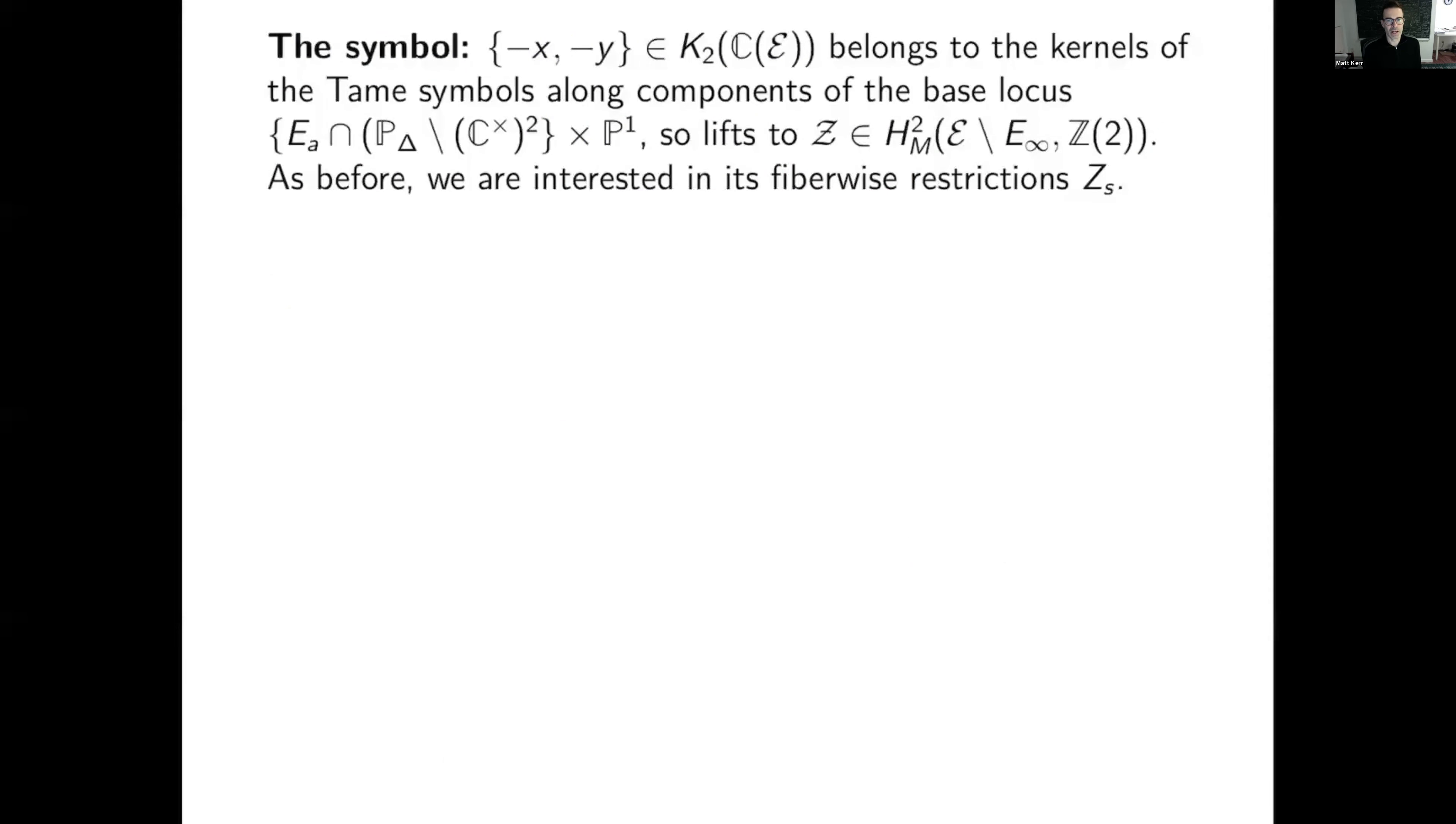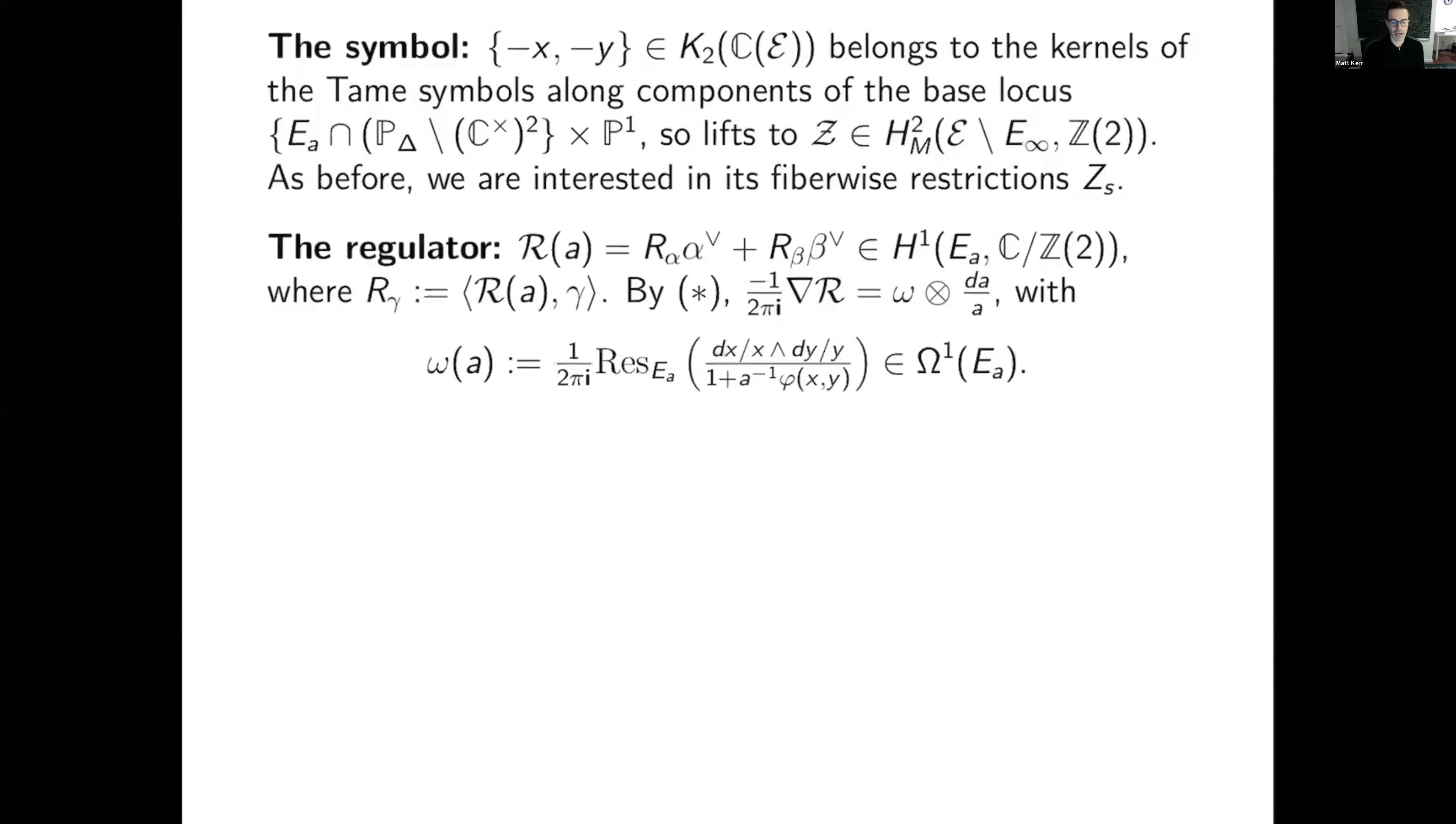Okay. So that's the family. The symbol that we need is minus X minus Y restricted to an elliptic curve, just the toric symbol. Just take the two toric coordinates, restrict them to E. That belongs to the kernels of the tame symbols along components of the base locus of the pencil. And so it lifts to a class on the total space of the fibration minus the Neron gon fiber. As before, we're interested in fiber wise restrictions, Z_s of curly Z. And we're going to take the regulator of the Z_s. S should really be A. So we take R of A to be the regulator of Z_A. And here I write R gamma for the pairing of this regulator class against homology class. And then by this star thing we had before, Nabla applied to R gives omega tensor dA over A with omega of A given by the standard residue one form.